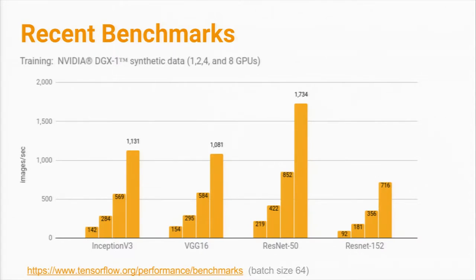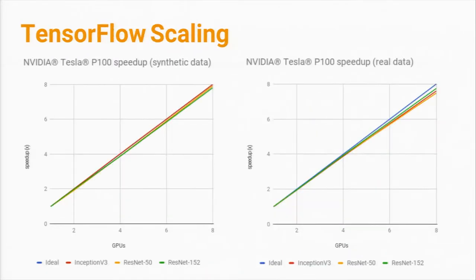We recently published some benchmarks on an image recognition model trained on the ImageNet dataset. What people care about here is: if you have some of the fastest GPUs packed into a machine, how well do you scale — how many samples can you process per second? You want to see roughly linear scaling. We think it's important to show results with real data as well as synthetic data, and within a machine TensorFlow is scaling very well compared to the ideal diagonal line.